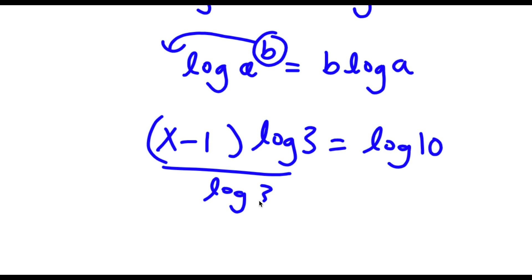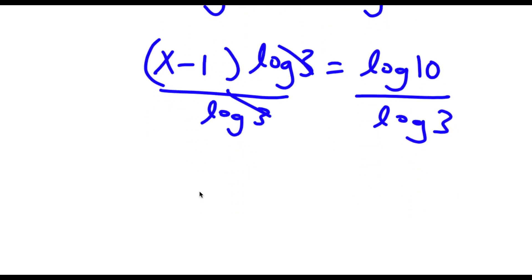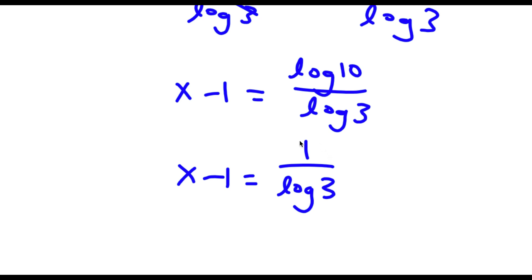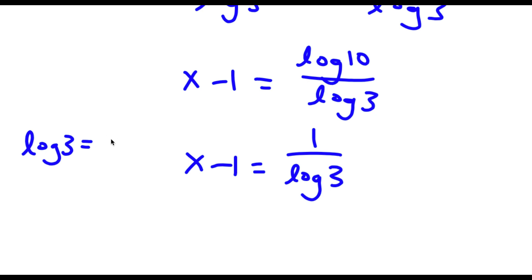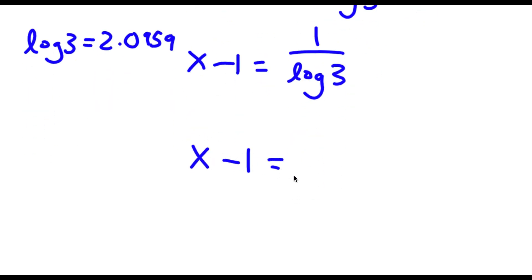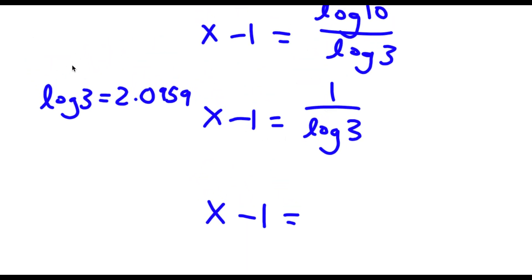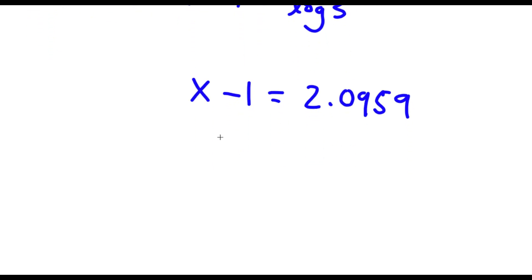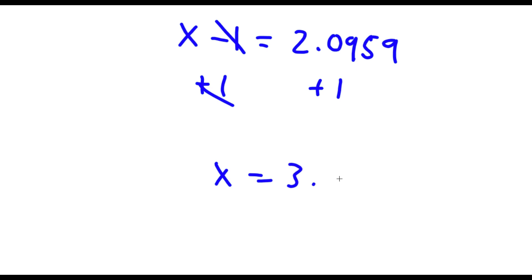Now if I divide both sides by log 3, these two cancel out. Now I'm left with x minus 1 is equal to log 10 over log 3. Now log 10 is actually equal to 1, so now I have x minus 1 is equal to 1 over log 3. And 1 over log 3 this is equal to 2.0959, so x minus 1 is equal to 2.0959. Now if I add 1 on both sides, these two cancel out and I'm left with x is equal to 3.0959.